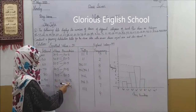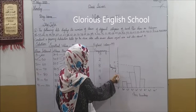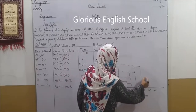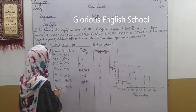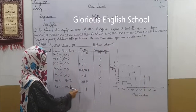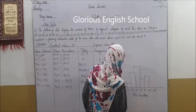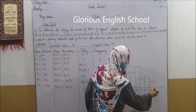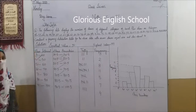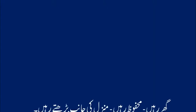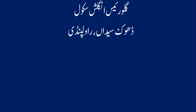For the class boundary 80.5 to 90.5, the frequency is 7. For 90.5 to 100.5, the frequency is 4. I hope you will learn it better and better. Thank you.